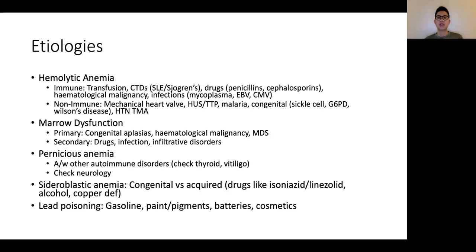In terms of marrow dysfunction, I think of it as whether it's a primary marrow problem — so it could be congenital such as congenital aplasia, or acquired such as hematological malignancies or myelodysplastic syndrome. For secondary causes of marrow dysfunction, this could be due to drugs such as chemotherapy drugs or certain antibiotics, infections as well, and some infiltrative disorders like lymphoma or malignancy or any infiltrative disorder that can replace the marrow.